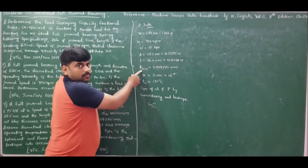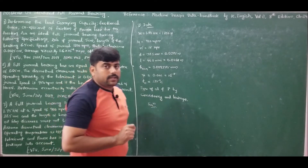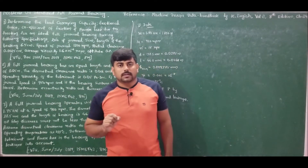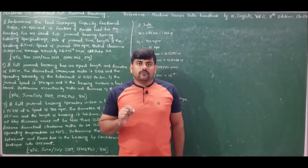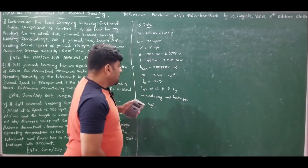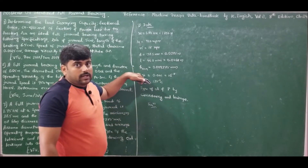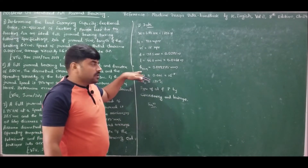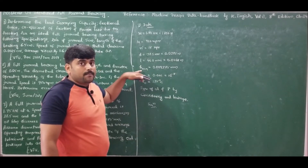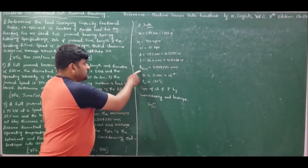Since H_min is specified and we need to find the type of oil, we use figure 24.12 which relates the variable delta versus Sommerfeld number. Viscosity is not directly specified — we find it through the Sommerfeld number. From viscosity and operating temperature, we determine the oil type using figure 24.2B and table 24.1.